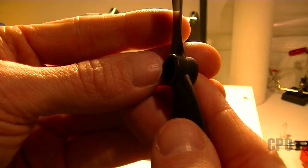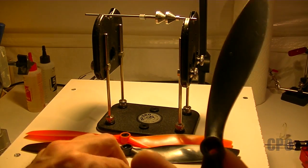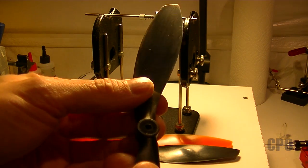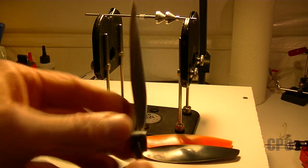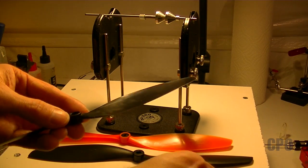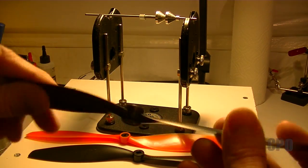if I add in the prop adapter that I'm going to use to actually mount the prop, then it guarantees that I'm accounting for any weight variances that the prop adapter is going to have, plus it also guarantees that I'm centering the balancing rod directly in the middle of the prop, as I'm going to have it on the motors.